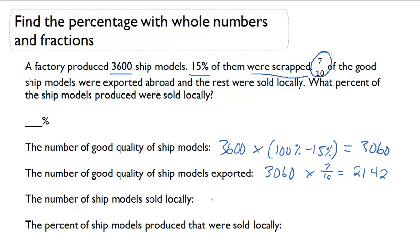Now you can figure out how many were sold locally. So if 3060 were not scrapped, subtract out the 2142. That leaves me with 968 that were sold locally.